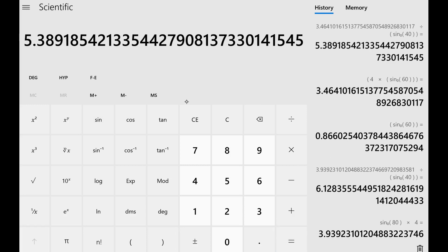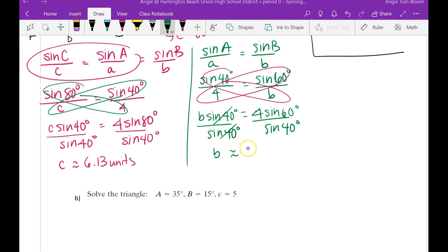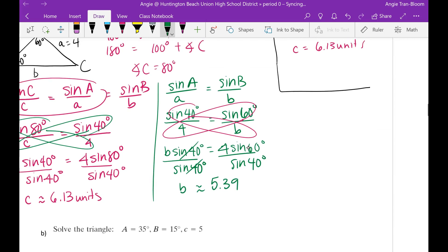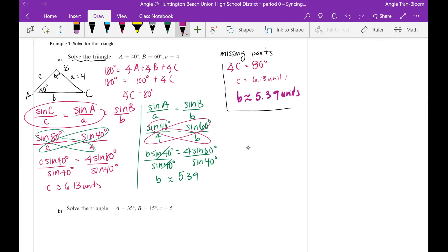That gives me 5.39. So 5.39. So that is your leg B. Let's put it in here. In my box. So that's how you solve non-right triangles using the law of sines.